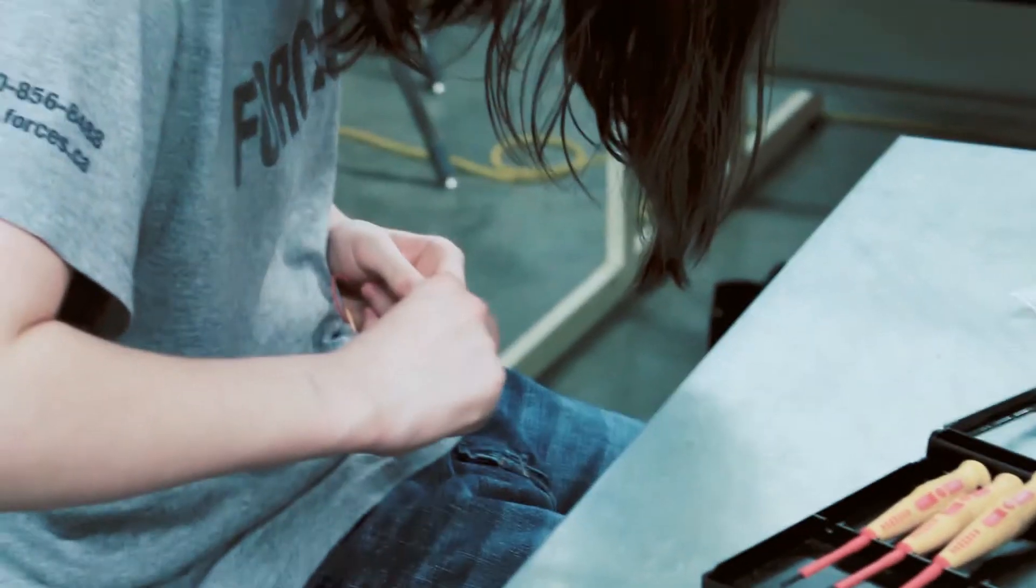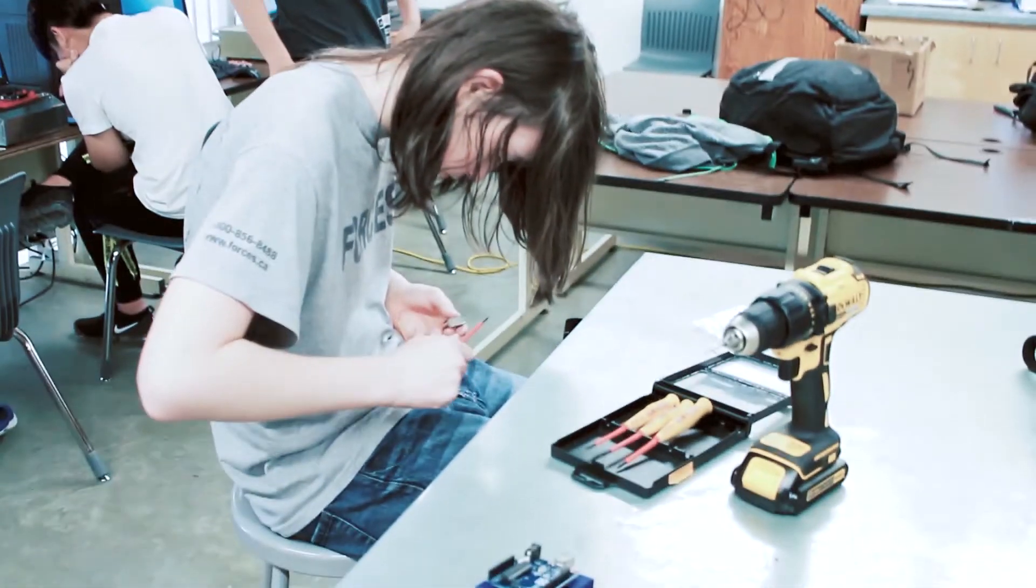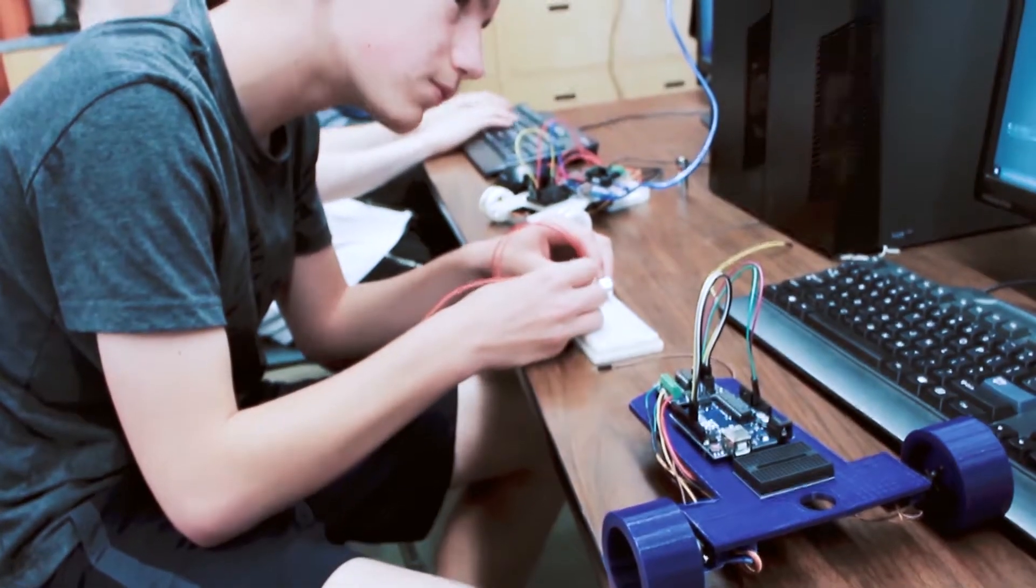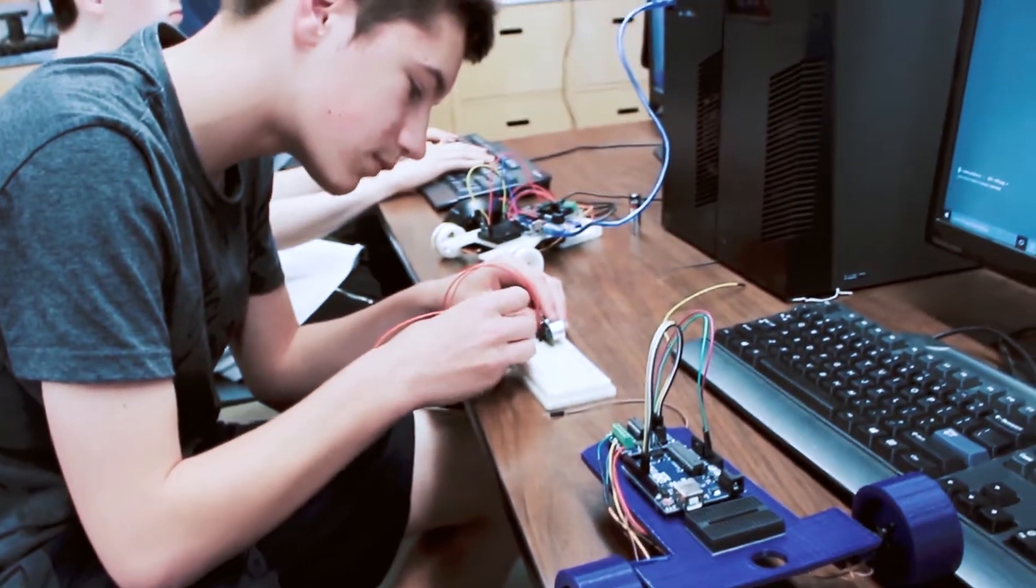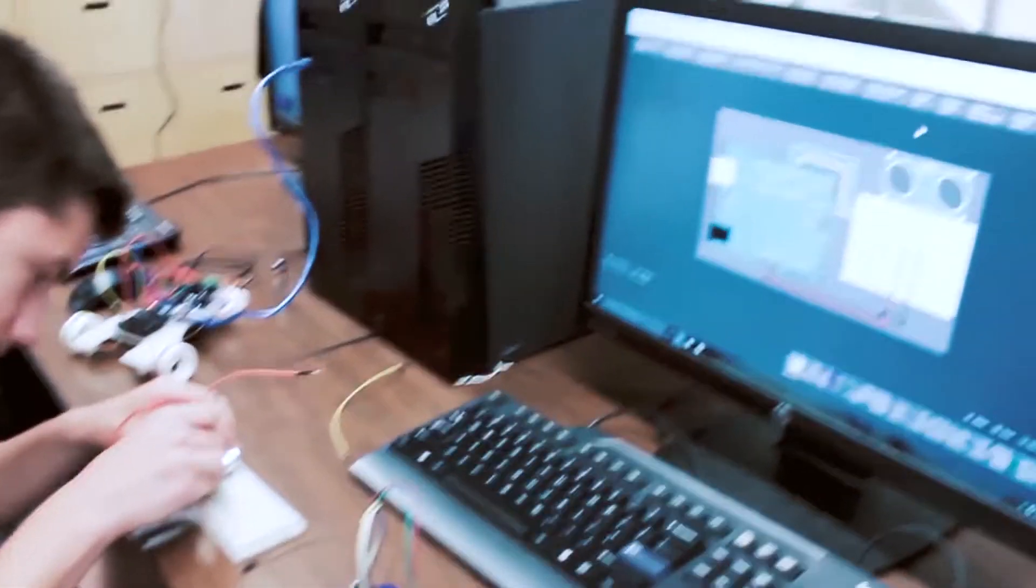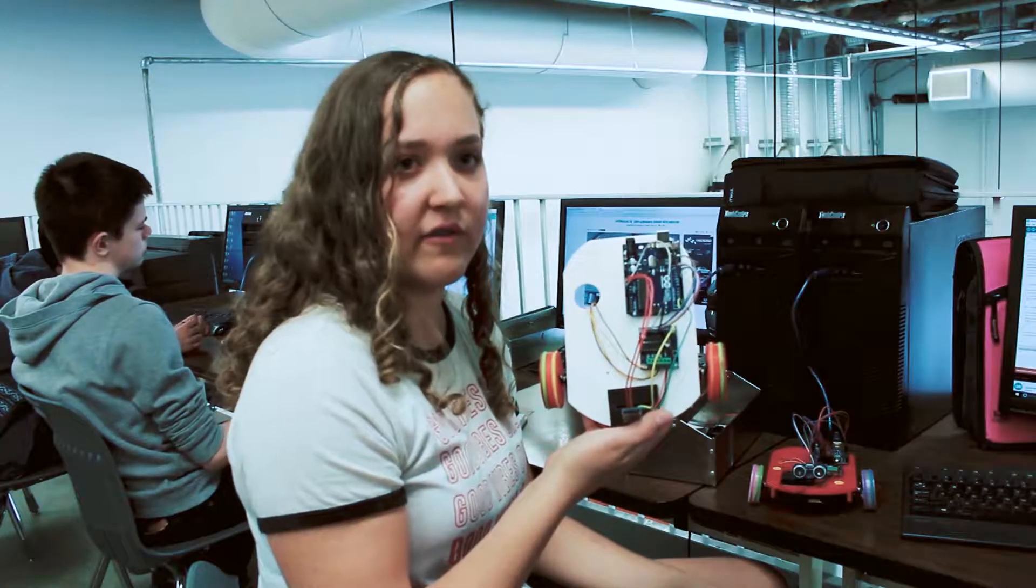We learned how to take measurements and plot out this for the board. Each person in the room has their own board that they make. We used a thing called Inventor and it helps us plot the points and make a chassis like this for our robots.